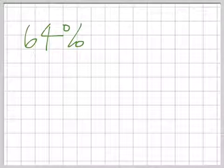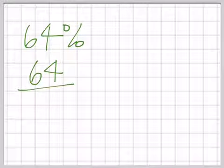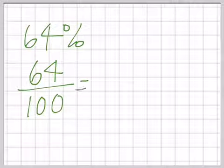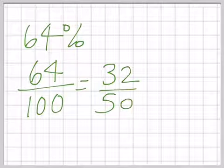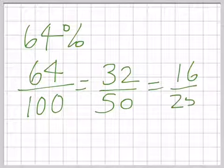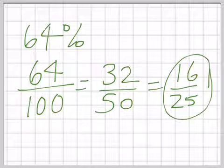64%, let's try that again. The percentage goes at the top as the numerator, our denominator is 100 because percent means out of 100. Then we simplify, divide by 2, we get 32 out of 50, and we can divide by 2 again to give us 16 25ths. We can't divide the top and the bottom by another number, that's as simple as it goes. So 64% is equivalent to 16 25ths.